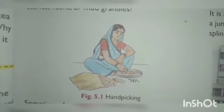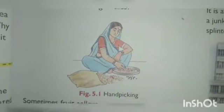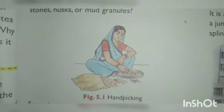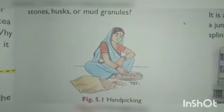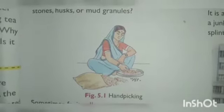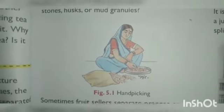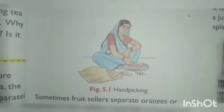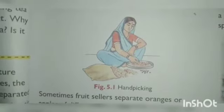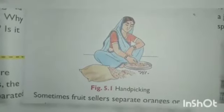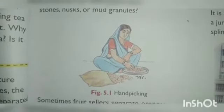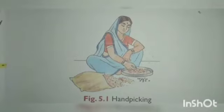Hand picking is a process of manual removal of components of a mixture based on differences in size, shape, appearance, or qualities. For example, your mother spreads rice on a plate and separates any stones or husk present in the rice — that is hand picking. Think of two more mixtures where hand picking is used to separate two or more components.